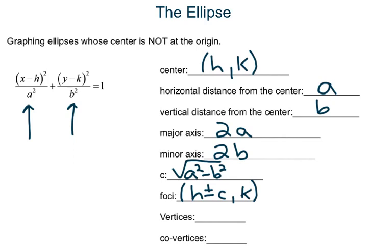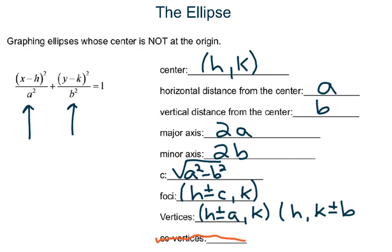Now your vertices: the distance from a is going to be plus or minus whatever a is from the center, and your y value stays the same. And the other pair of vertices is when your h stays the same, but your y value gets added plus or minus whatever b is. This will make a little more sense as we start plugging in values for a and b. So let's go ahead and do that.